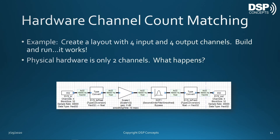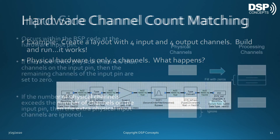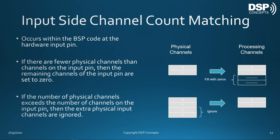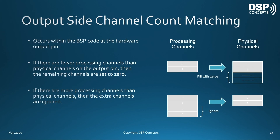Another principle in AudioWeaver is hardware channel count matching. You could create a layout with four input and four output channels, and it will still work even if the physical hardware only has two channels. On the input side, physical channels are copied to the first processing channels and any extra processing channels are set to zero. Similarly, if there are more physical channels than the layout uses, the extras are ignored. The same logic applies on the output — extra physical channels are filled with zeros, and if there are fewer physical channels, extra layout output channels are ignored.